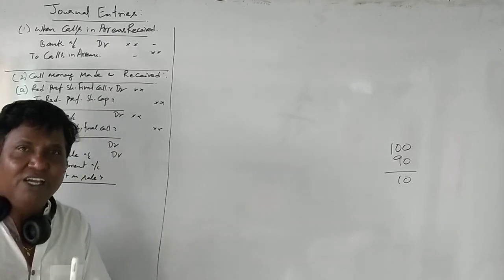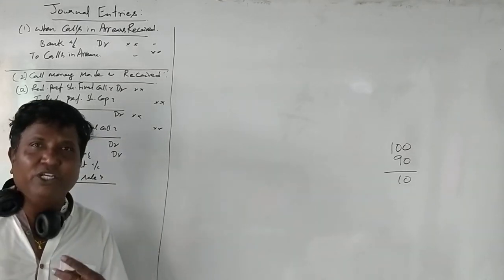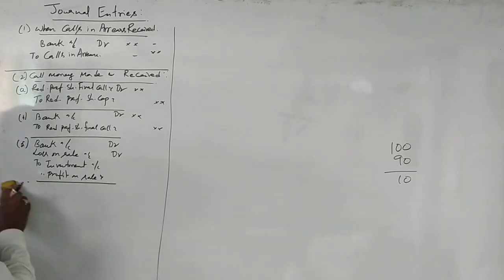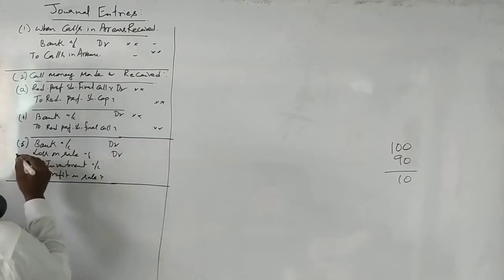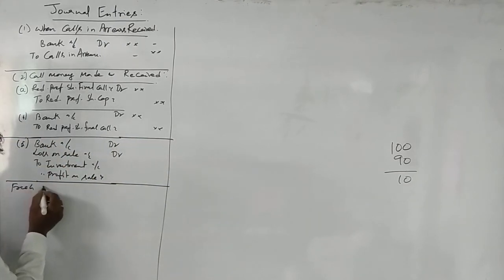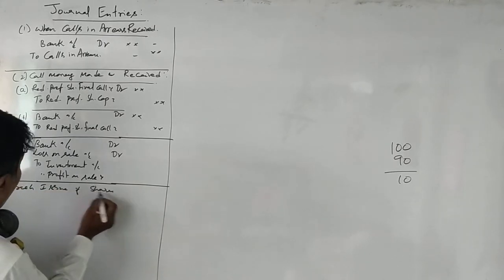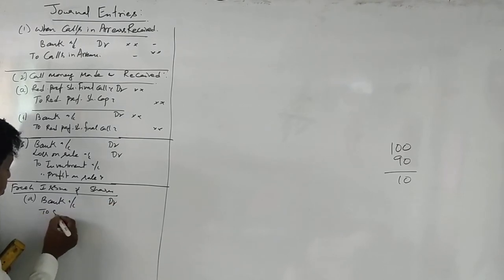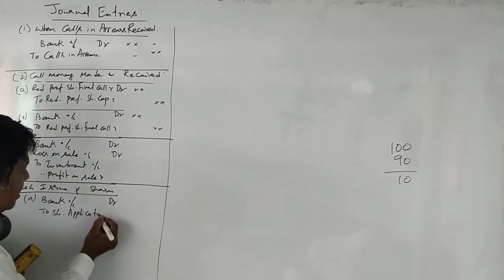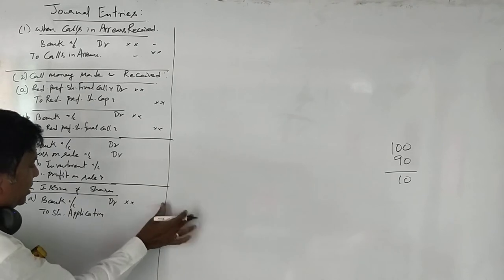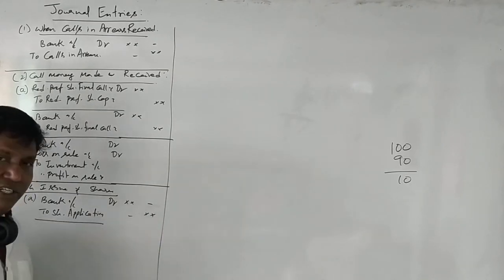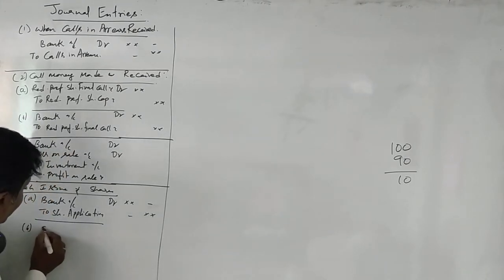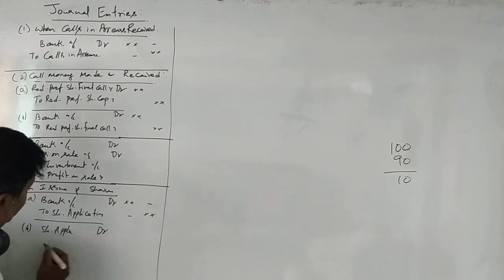Next is fresh issue of shares. When going for a fresh issue of shares, we pass two general entries. The first is: bank account debit to share application account — showing that share application money is received. Once the share application money is received, we transfer it to share capital: share application account debit to share capital account.